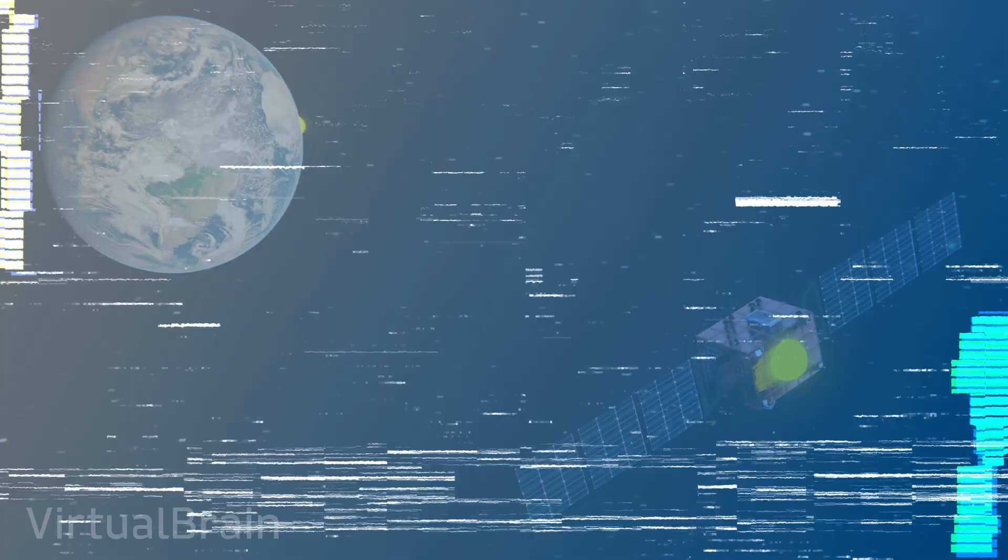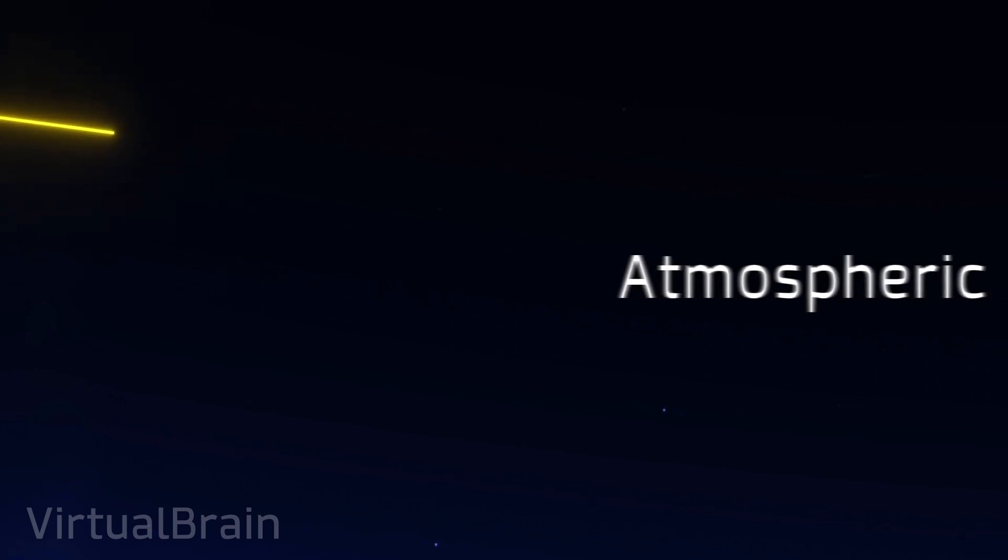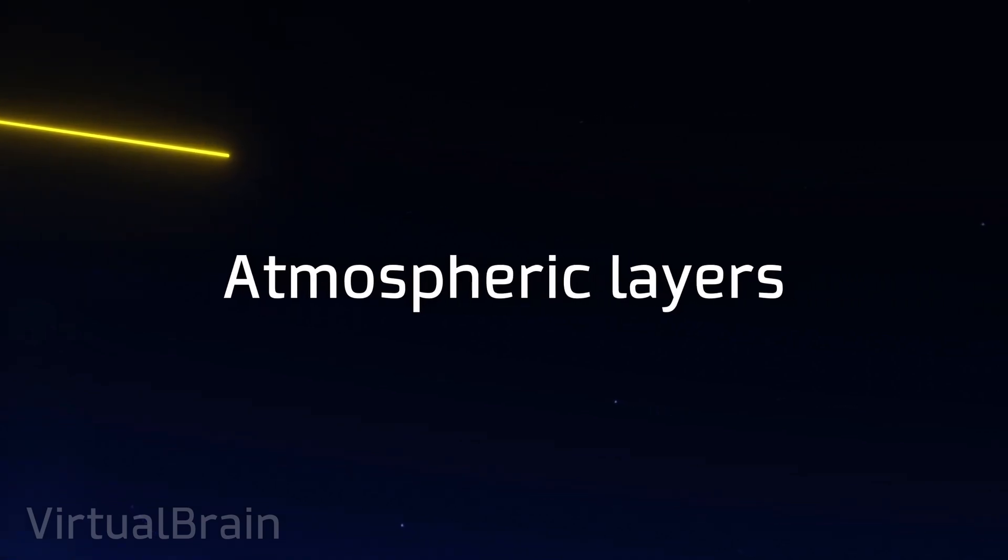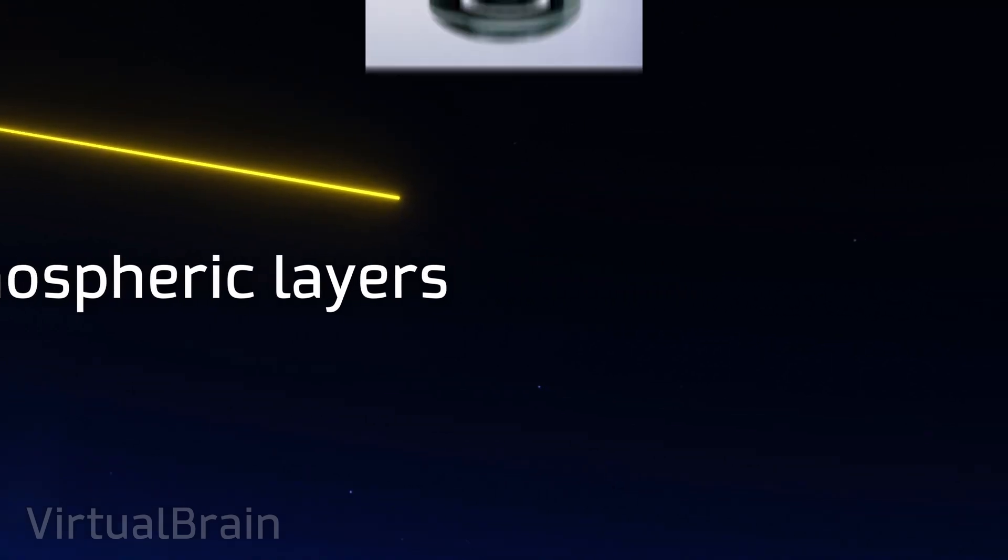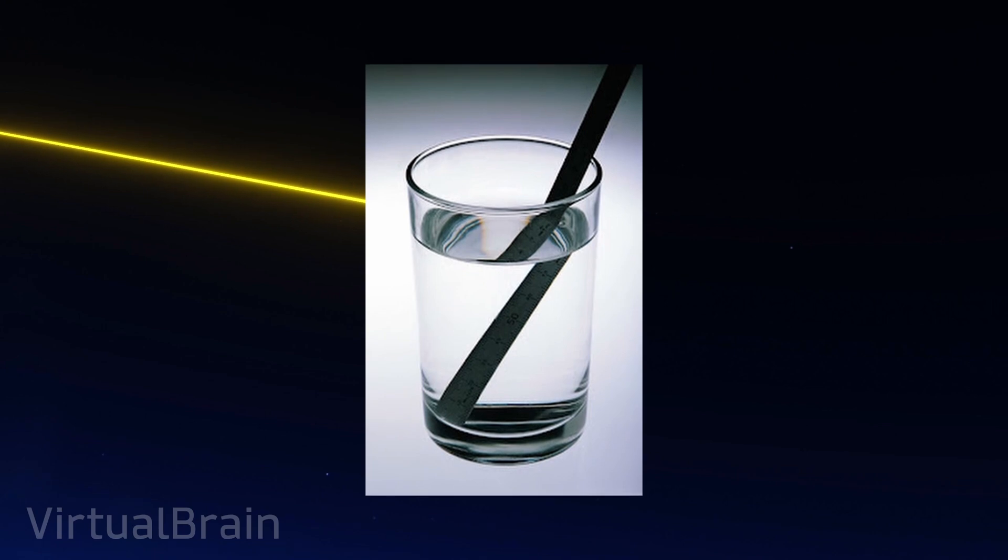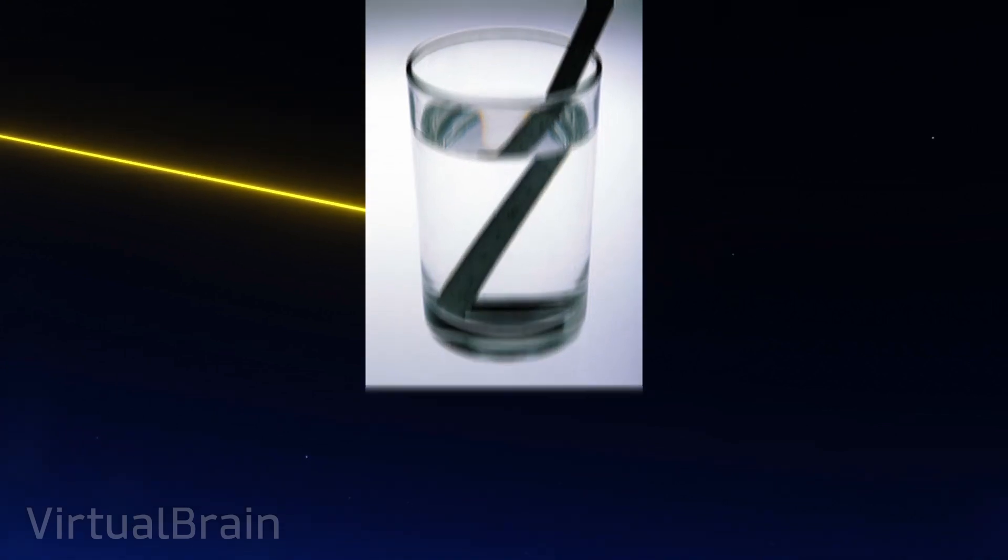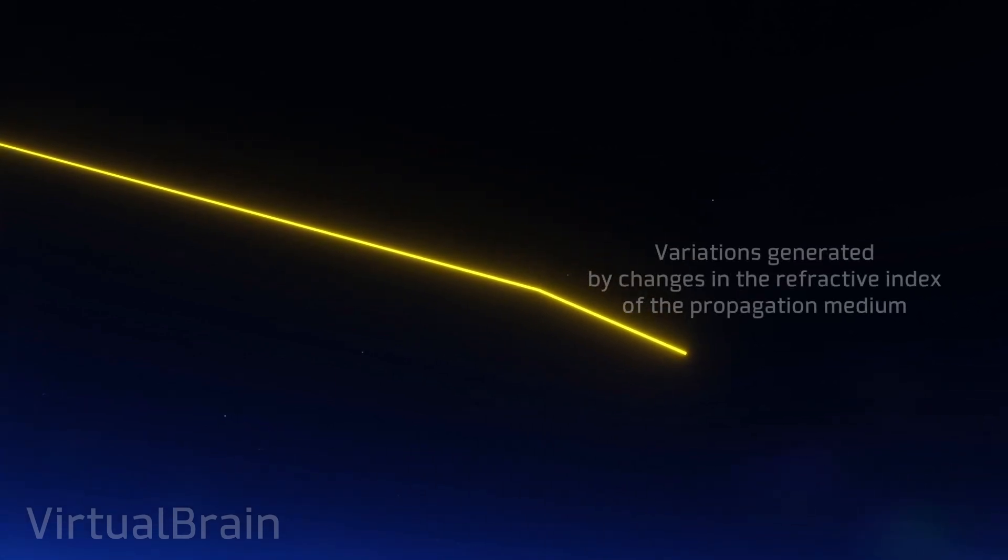Finally, the third element to be considered in the calculation of the distance is the effect of the atmospheric layers, or rather, of the refraction of the signals as they pass through them. Just as when we look through a glass of water and the light is distorted, when a signal is sent by a satellite at an altitude of 20,000 kilometers, it has to pass from the vacuum of space through each of the layers of the atmosphere before finally reaching the receiver.